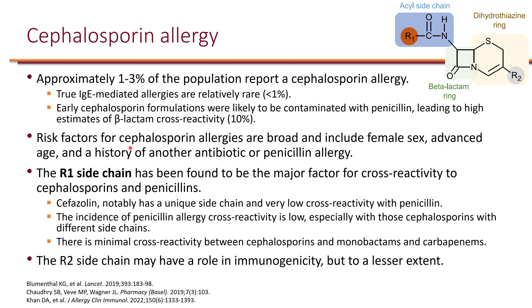About 1 to 3% of the population reports cephalosporin allergy, making it even rarer than penicillin allergy, with less than 1% having a true IgE reaction. Cephalosporins have two sidechains — R1 and R2 — and the second ring is slightly different from penicillin, though the beta-lactam ring is identical. Notably, cefazolin has a unique sidechain with very low cross-reactivity with penicillins, and no other beta-lactam shares its sidechain. Cross-reactivity decisions rely primarily on the R1 sidechain, as the R2 sidechain plays a lesser role in immunogenicity.